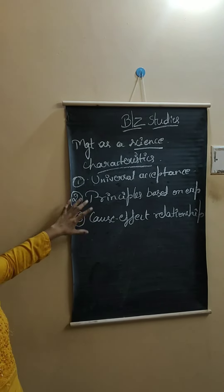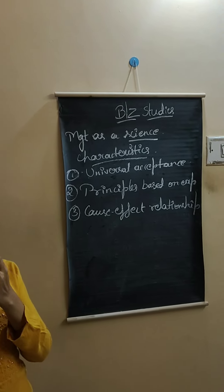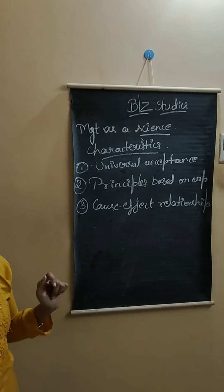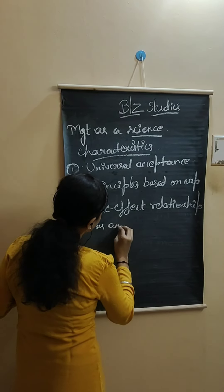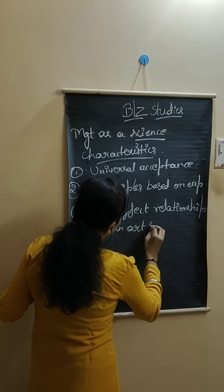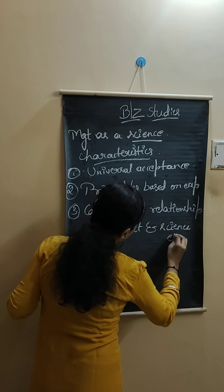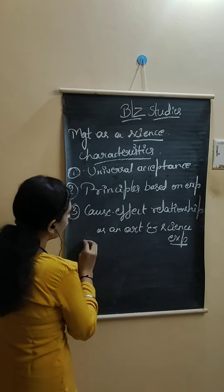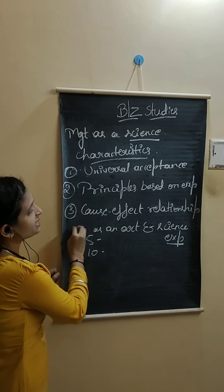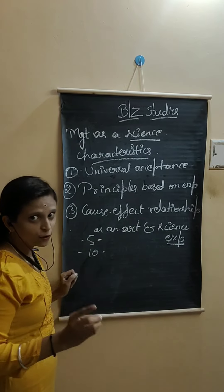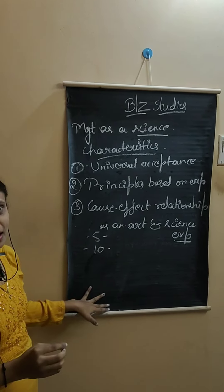So, I will end the session here. This is also one of the important topics. In your exams, they will ask for 10 marks about management as an art and science — explain. So, this is worth 5 marks or 10 marks. Read management as an art and science carefully. These two are very important topics.